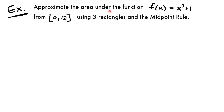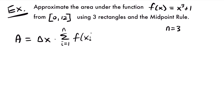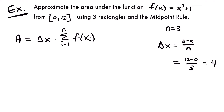Our next example: approximate the area under f(x) equals x cubed plus 1 from 0 to 12 using 3 rectangles and the midpoint rule. We're told n equals 3. We'll use the formula where delta x times the sum from i equals 1 to n of f(x sub i) gives the area. Delta x equals b minus a divided by n, where a is 0 and b is 12, so delta x equals 12 minus 0 divided by 3, which equals 4. The width of each rectangle is 4.